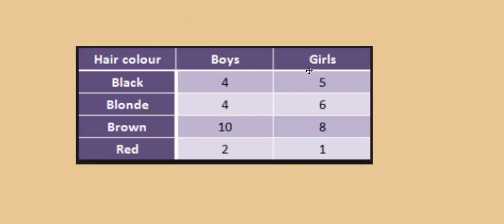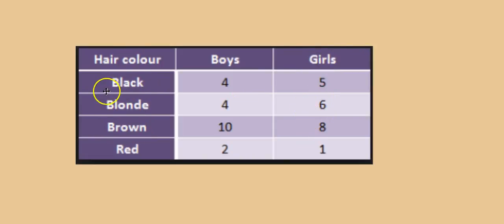Let's have a closer look at this particular two-way table. It has the results of the survey already entered. The reason it's called a two-way table is because you're looking at the data two ways — from the perspective of gender and also hair color. Reading horizontally along the rows shows hair color, and reading vertically along the columns shows gender.